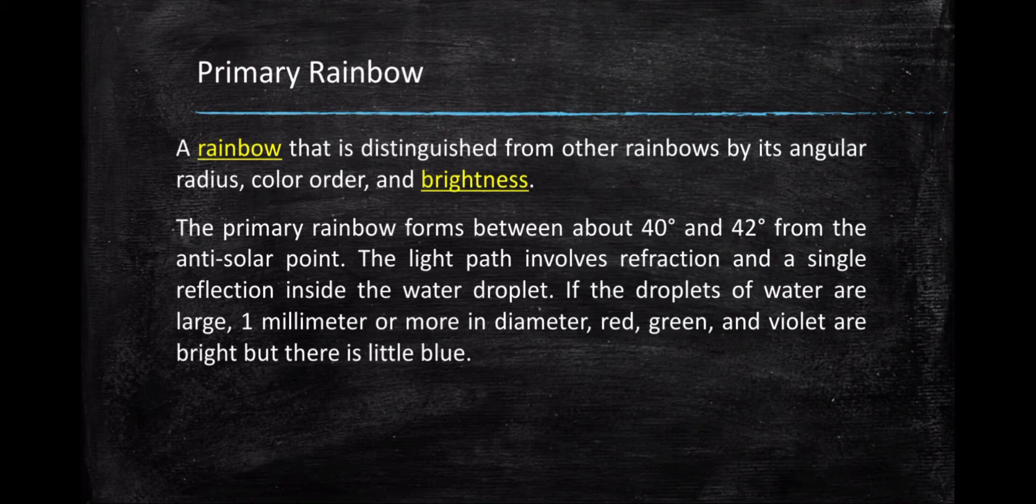Primary rainbow are distinguished from other rainbows by its angular radius, color order, and brightness. The primary rainbow forms between about 40 degrees and 42 degrees from the anti-solar point. The light path involves refraction and a single reflection inside the water droplet. If the droplet of water are large, 1 millimeter or more in diameter,